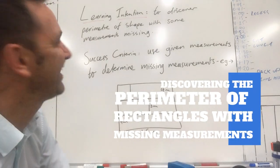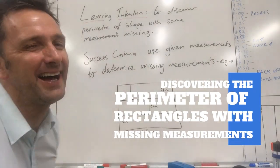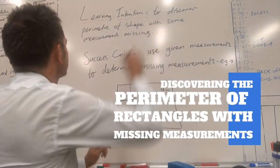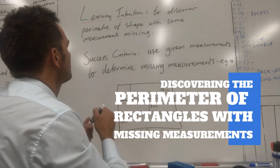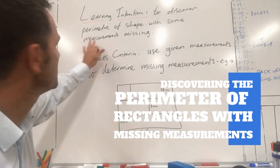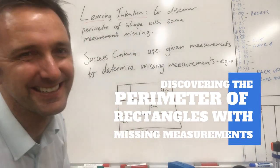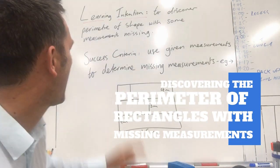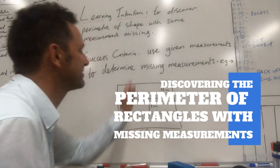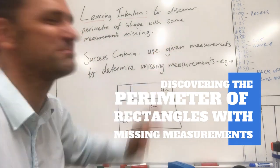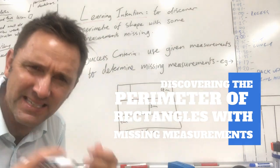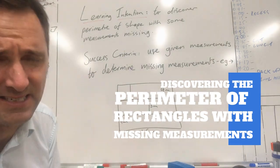G'day guys, here we are. Our learning intention is to discover the perimeter of a shape with some measurements missing. The success criteria will be to use given measurements to determine the missing measurements. This is how we're going to succeed.